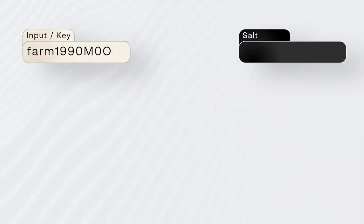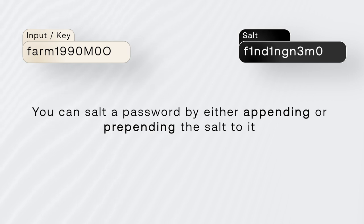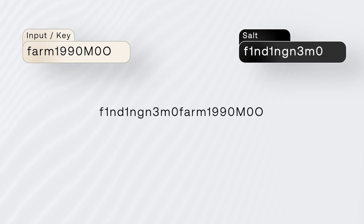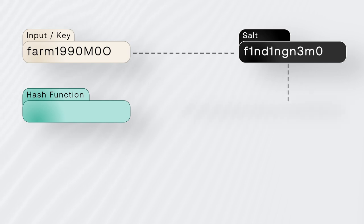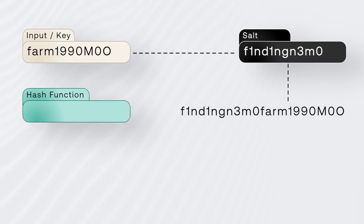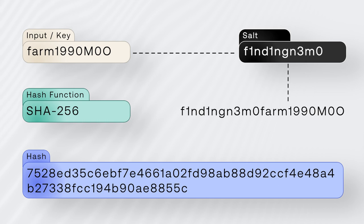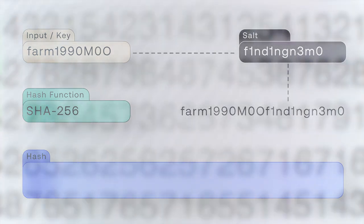Let's say we have a password "FORM1990MOO" and the salt "FINDINGNEMO." We can salt that password by either appending or prepending the salt to it. For example, "FORM1990MOO FINDINGNEMO" or "FINDINGNEMO FORM1990MOO" are valid salted passwords. For prepending the salt, the salted input would be "FINDINGNEMO FORM1990MOO," and after running it through the hash function, this would be the result. For appending the salt, the salted input is "FORM1990MOO FINDINGNEMO," and the hash result is different.